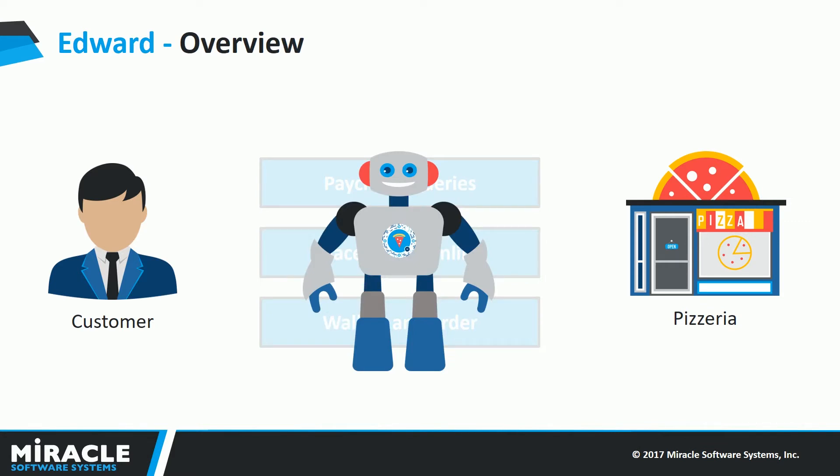EDWORD is a chatbot that can help users purchase food over a quick chat. It aims to provide a simple conversation-based interface that users can take advantage of and order food easily. Plus, the representatives at the pizzeria do not have to change their flow of operation, since they would still receive orders as an online transaction. Without much ado, let's see what EDWORD can do.